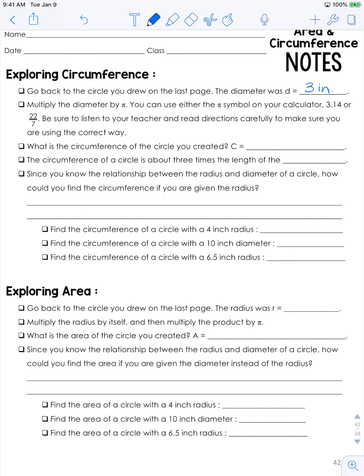You can either use the pi symbol on your calculator, 3.14, or the fraction 22 over 7 which is also equal to pi. Just be sure to listen to your teacher and read directions carefully to make sure you're using it the correct way.